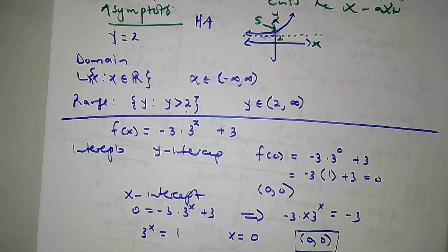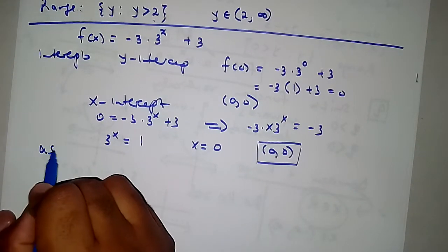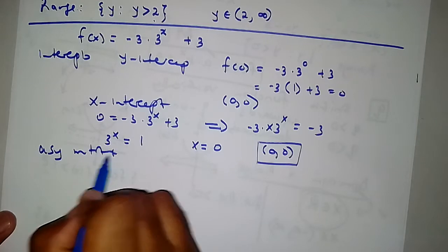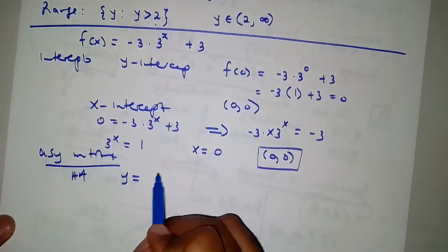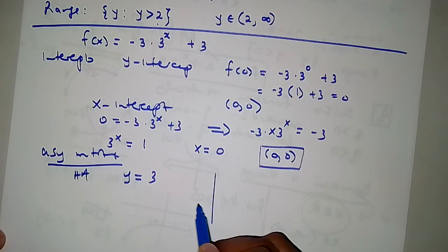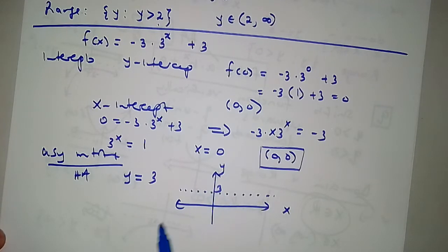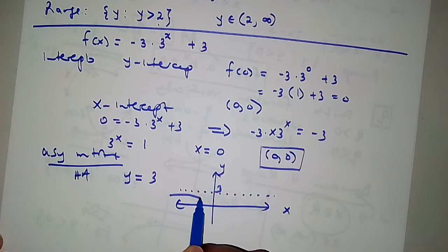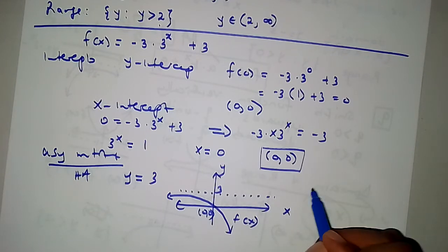The horizontal asymptote is y equals to 3. Let's draw the function: here is the y-axis and the x-axis, with y equals 3 marked up here. Since a is negative, the graph approaches y equals 3 from below. The graph passes through the origin (0, 0). This is how our function f of x looks. The domain is x is an element of real numbers.